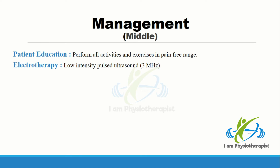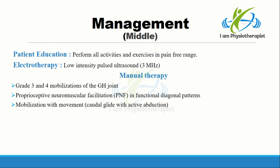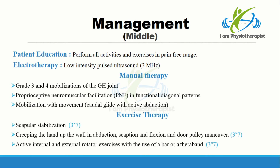Progression of management in the middle phase: to prevent re-injury and damage to the bursa, the patient was advised to perform all activities and exercises in a pain-free range. Low intensity pulsed ultrasound was continued to facilitate healing. Manual therapy techniques including grade 3 and 4 mobilizations of the glenohumeral joint, proprioceptive neuromuscular facilitation in functional diagonal patterns, and mobilization with movement including caudal glide with active abduction were performed. Exercises advised included scapular stabilization exercises, creeping the hand up the wall in abduction, scaption and flexion, pulley exercises, and active internal and external rotation exercises using a bar or theraband.